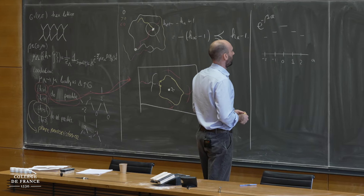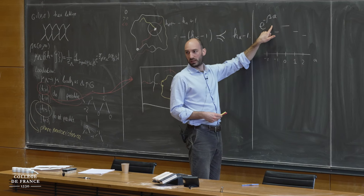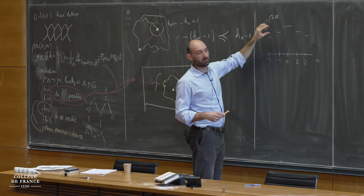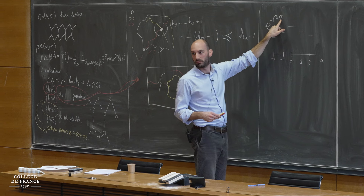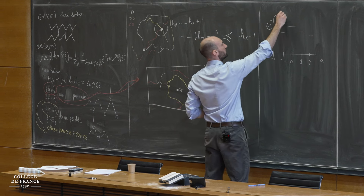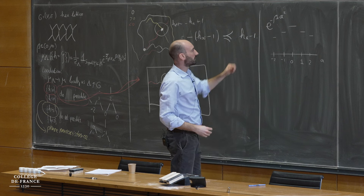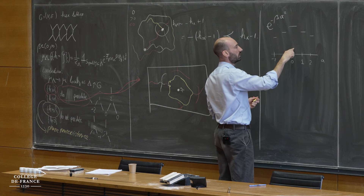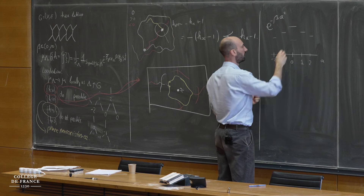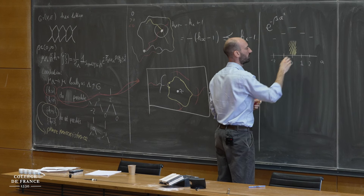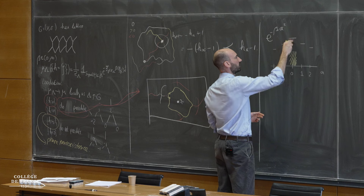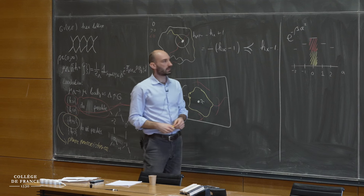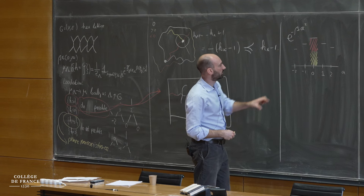We have a weight associated to each edge, because the probability of a height function is the product over edges of e to the minus beta times the height difference squared. Now I'm going to write this function in a different way: I split the weight at zero into two equal bits. If I have an edge with zeros at both sides, I flip a coin, but I want to find something that corresponds to this weight.